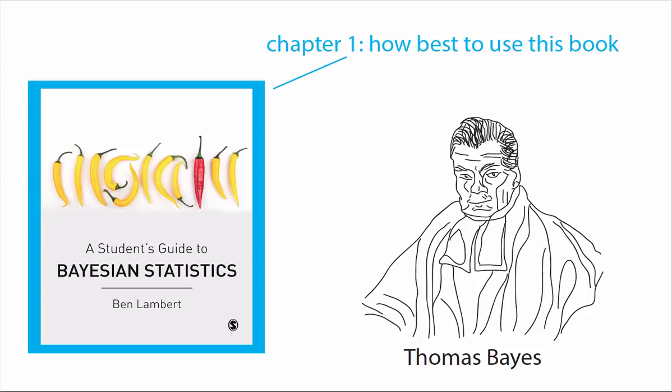The first chapter is a description of how best to use the book. It contains details of the content and how it's laid out. This chapter also contains some paths through the book that I suggest for people who have a restricted amount of time but still want to learn about various elements of Bayesian inference.